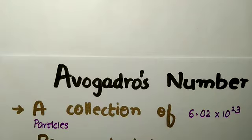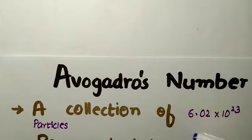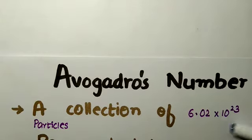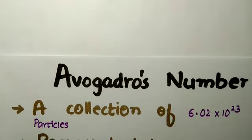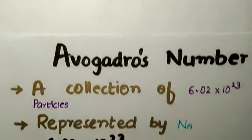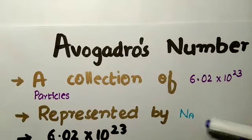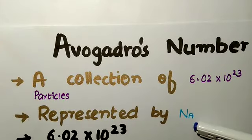Assalamualaikum. Today our topic is Avogadro's number. Avogadro's number is a collection of 6.02 × 10²³ particles. Avogadro's number is represented by Nₐ.